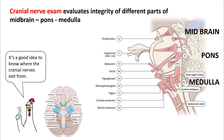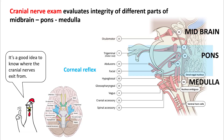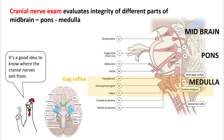Cranial nerve examinations are important because they evaluate the integrity of different parts of the midbrain, pons, and medulla. It's a very good idea to know where the cranial nerves exit from, because their nuclei are located in that area. For example, the light reflex looks at cranial nerve two and three, which can assess midbrain and upper pons. The corneal reflex looks at cranial nerve seven and five, so it evaluates the pons pretty well. The doll's eye and caloric tests look at the pons and midbrain.